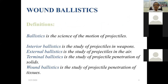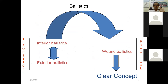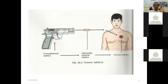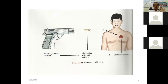Interior ballistics is the study of the projectile within the weapon. External ballistics is the study of the projectile in the air. Terminal ballistics is the study of the projectile at the tissue level. This figure explains proximal, intermediate, and terminal ballistics — all covered in the last lecture.